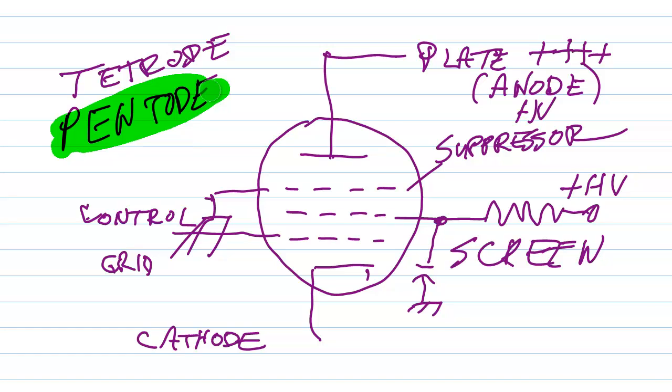The suppressor grid repels those secondary electrons back to the plate. In other words they're trying to get away and it captures them, it drives them back into retreat and back out to ensure that the amplifier has as much gain as possible.